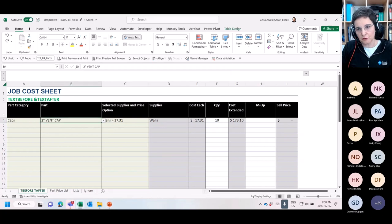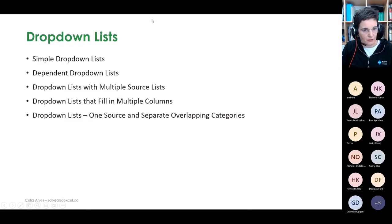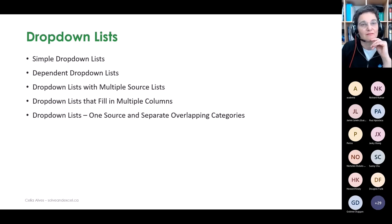We're at time, but let me address Henry's comment about Microsoft formatting — specifically the request that dynamic array formatting should extend to cover the entire spilled array. That would be a really nice feature. Currently, spilled results don't inherit the formatting of the source cell. For example, dates in a spilled range don't automatically display as dates — only the first cell might, because Excel recognizes it as a date.